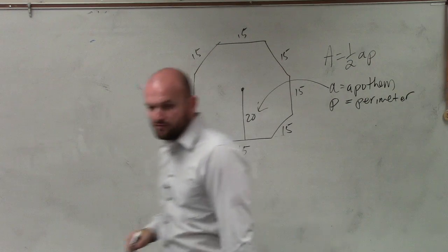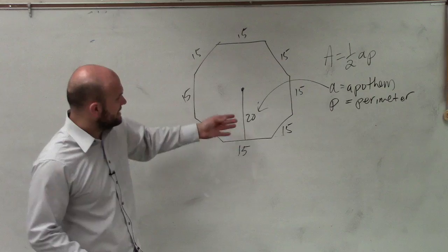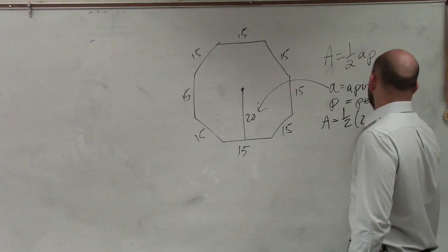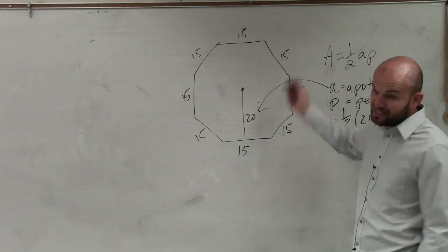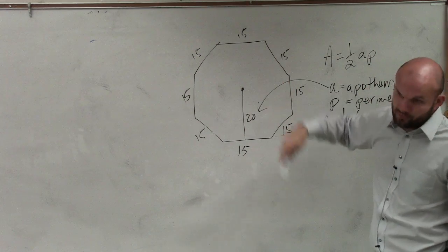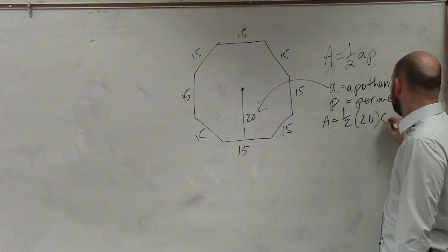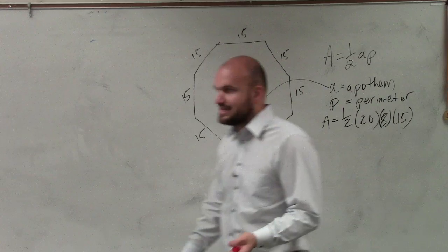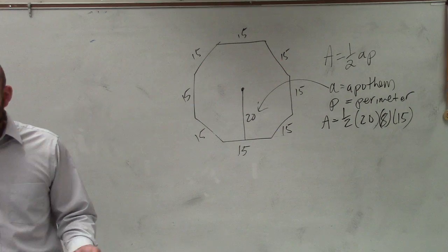So therefore, you guys can see that the area equals 1 half 20 times, now I need to figure out the perimeter. Now, I could add 15 up all the time, or you could just say 8 times 15, right? Is adding 15 eight times the same thing as saying 8 times 15?